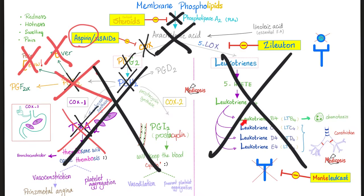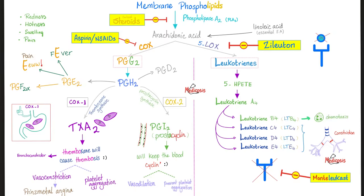Because leukotriene B4 is one of the recruiters of neutrophils. See my video on acute inflammation.